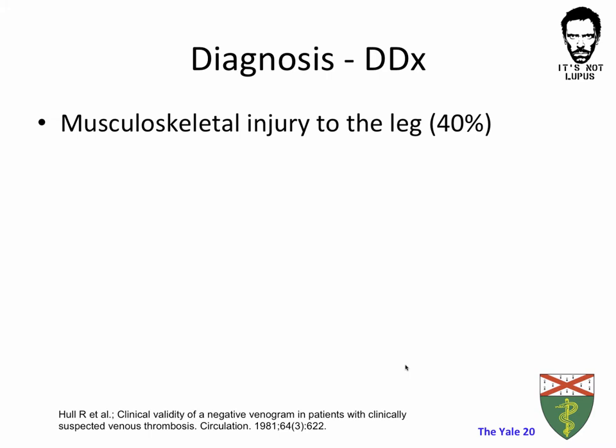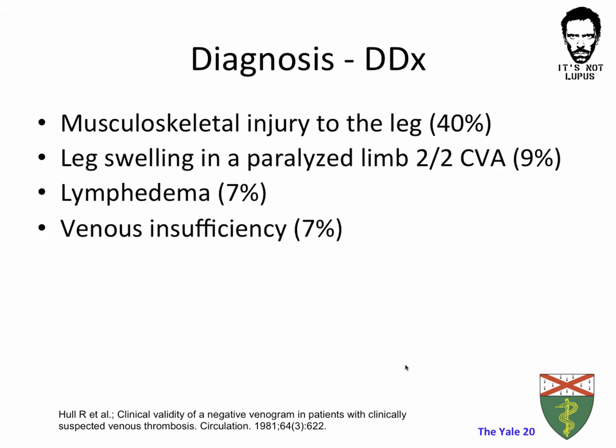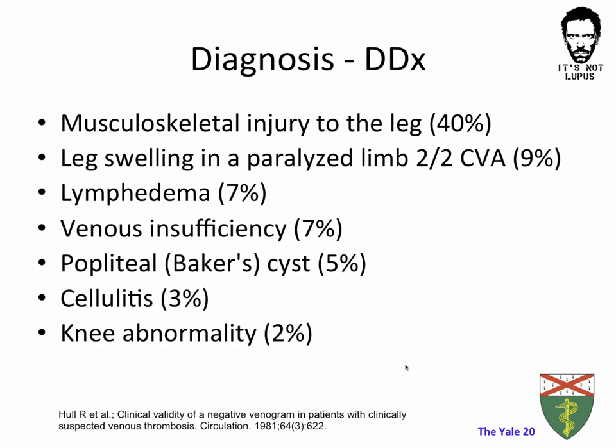What are the differential diagnoses you need to consider for patients with suspected DVT? In one study, the gold standard diagnostic test — a venogram — was performed on patients with high clinical suspicion for DVT. Patients with a negative venogram ended up, in most cases, with a musculoskeletal injury to the leg, which accounted for 40% of cases. Other differential diagnoses to keep in mind are venous insufficiency, lymphedema, or swelling in a paralyzed limb following a stroke. Less prevalent differentials are cellulitis, a Baker's cyst, or other injuries to the knee. In a substantial proportion of patients, the eventual diagnosis remains unknown.